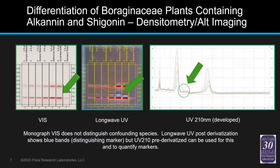From a prior presentation: when looking at boraginaceae plants containing allantoin and chigonin, the monograph only shows the visible plate — but it doesn't help diagnose confounding species. Looking at the lanes, you can't tell the difference, but lanes 4, 5, and 6 are actually another species. If you just have the vis plate, you wouldn't be able to differentiate them. You can start to see differences in long-wave UV, and when you scan at UV-210, you can really pull out the additional diagnostic peaks.